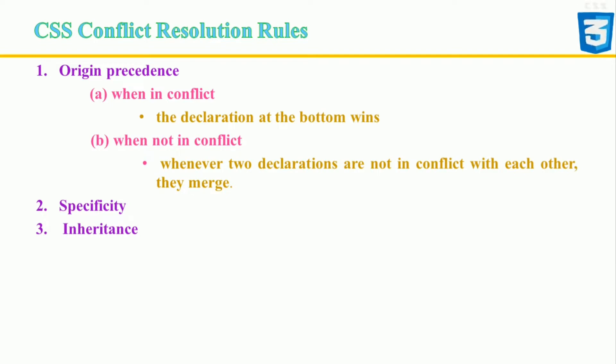In CSS, style sheets cascade by order of importance. If rules in different style sheets conflict with one another, the rule from the most important style sheet wins. When origin precedence is in conflict, remember that an HTML page is read sequentially from top to bottom — so when there are two different specified styles for an element, the declaration at the bottom wins.